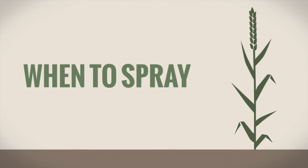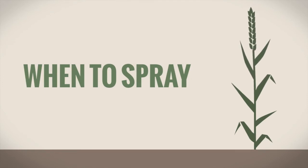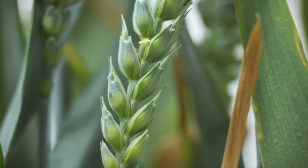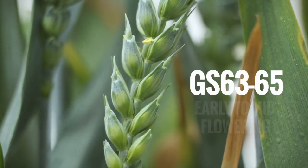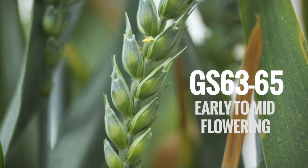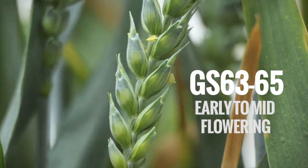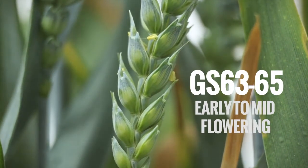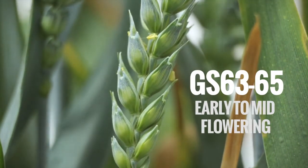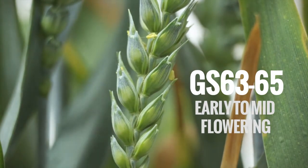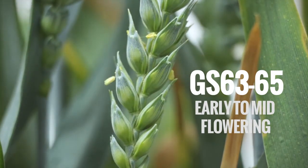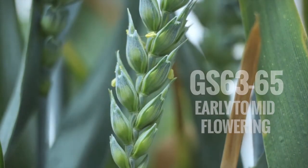When to spray: to get the most out of your T3, look to spray at mid-flowering, between GS 63 to 65, when the flowers are open and the anthers are extended in the main canopy. With most T3 sprays only having plus or minus 3 days activity against the disease, getting your timing right to ensure maximum protection for your crop is important.